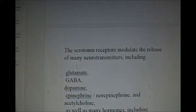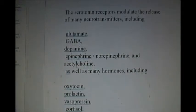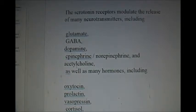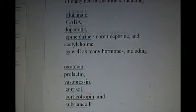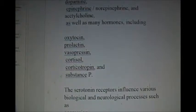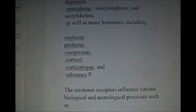The serotonin receptor modulates the release of many neurotransmitters that is glutamate, GABA, dopamine, norepinephrine, acetylcholine and many other hormones including oxytocin, prolactin, vasopressin, cortisol, corticotrophin and substance P.